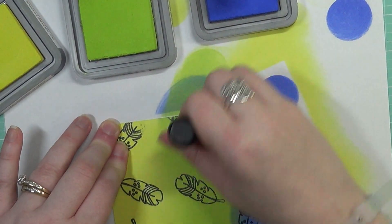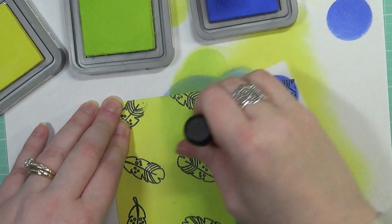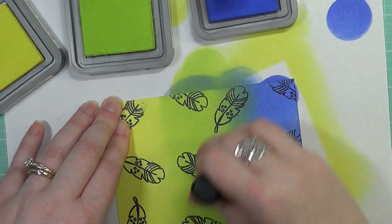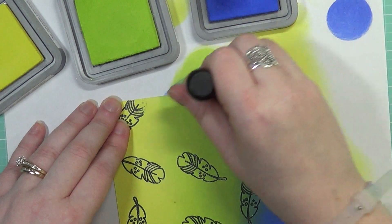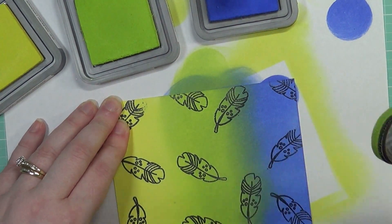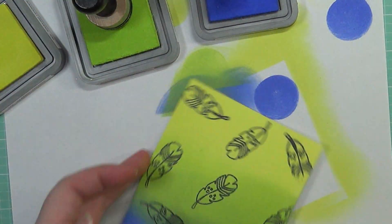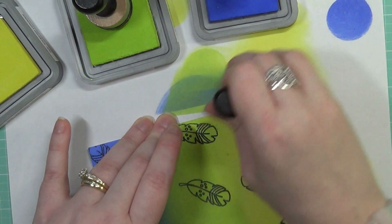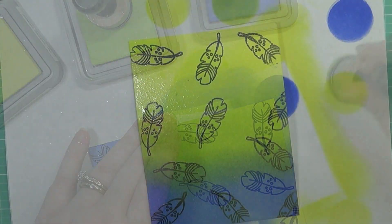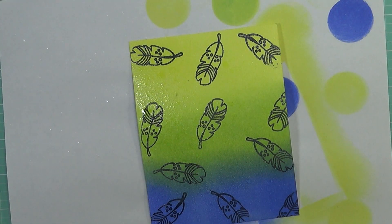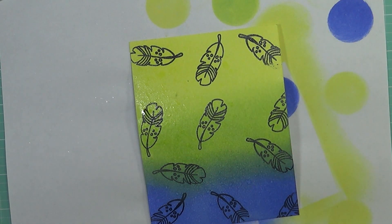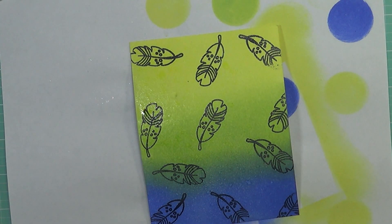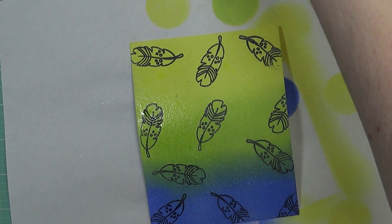I love, as I mentioned in the beginning of the video, I really do love this feather, and of course since we are inking over the embossed areas of the feather, it resists that ink. But of course you can't work with Distress Oxides or Distress inks without using water, because that's what they're known for.